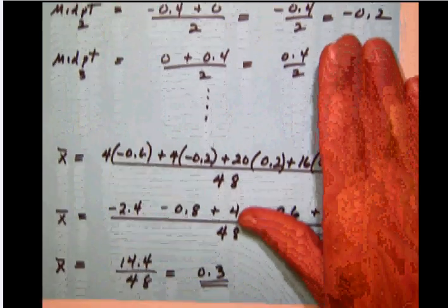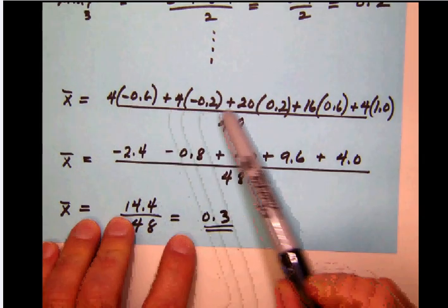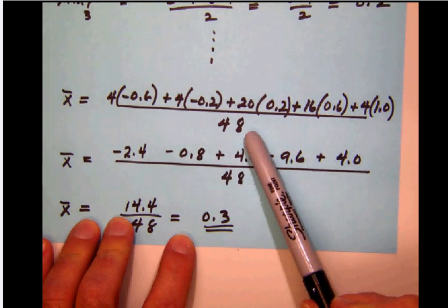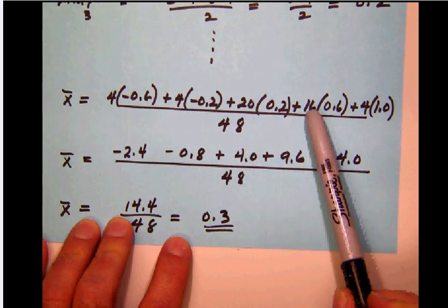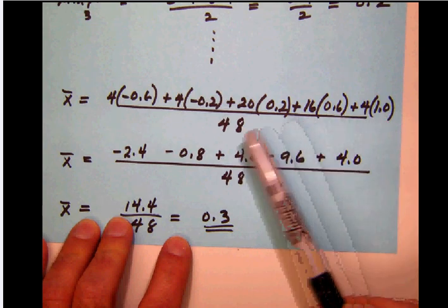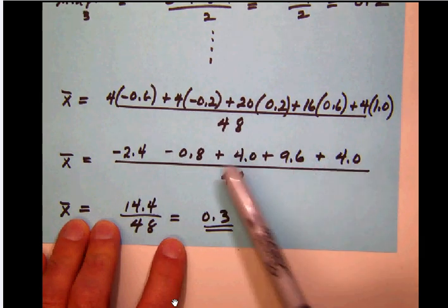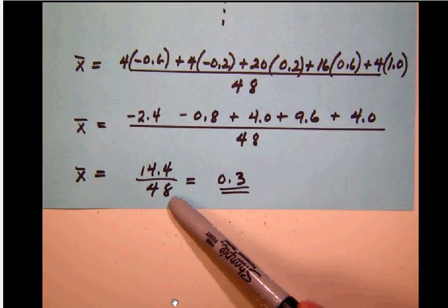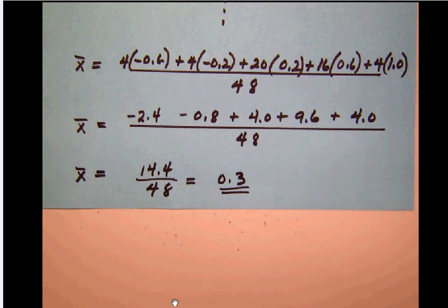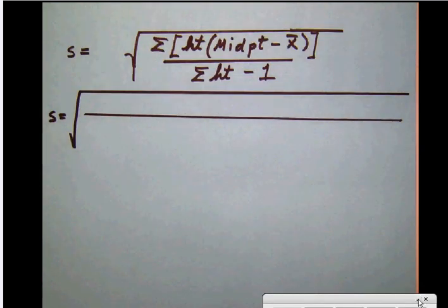To calculate the mean, we multiply the height of each bar by the midpoint of that bar, add those up for all bars, then divide by n — the sum of the heights. I've set that up with each bar's height times midpoint. Working through all of them, the sum comes out to 14.4. The total count n is 48, so our mean x̄ is 0.3. We'll need that value as we head into the standard deviation calculation.